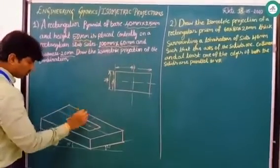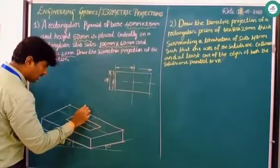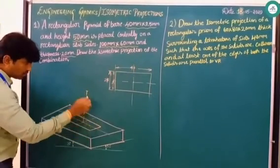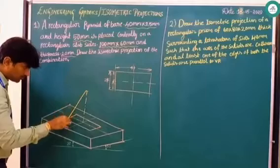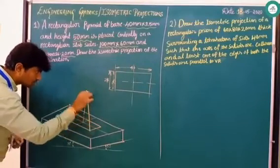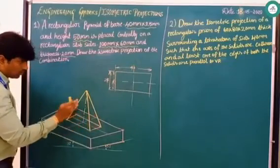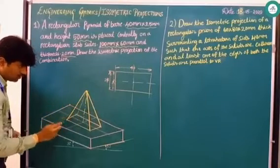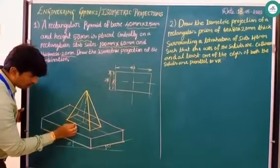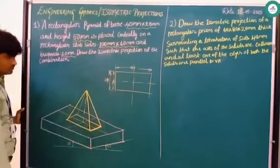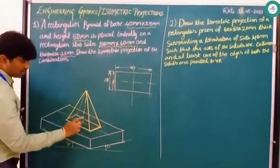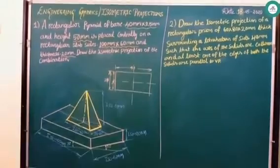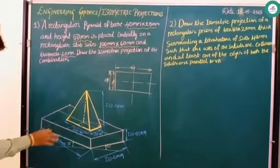The pyramid height is 50mm. From the centre point of the base, raise the height to 50mm. Then join this apex point to all four base corners. When the front face is clearly visible, draw the hidden edges with a very thin line and highlight the visible faces. Lines that are not visible should be erased or maintained as thin lines.